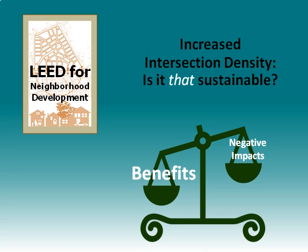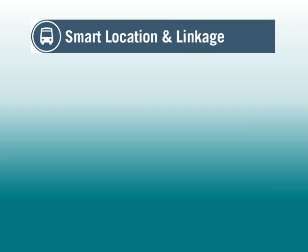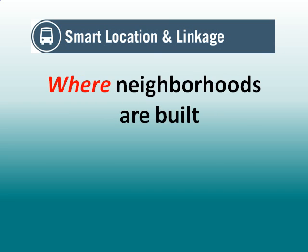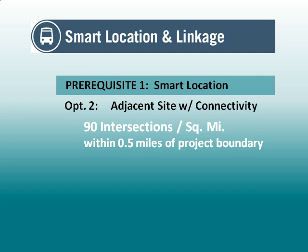Within the LEED-ND rating system, intersection density is addressed in four different places. The first two are in the Smart Location and Linkage category, which deals with the context into which proposed development is located. Prerequisite one, Smart Location, is the first instance in which intersection density is addressed. One of the options to satisfy this prerequisite is to locate the proposed development in an area with a surrounding intersection density of at least 90 per square mile.